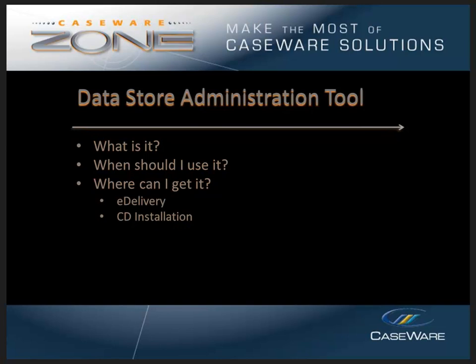So where can you get it? The Data Store tool is a component separate from Working Papers, which allows you to create, connect, and customize data stores. It is intended for use by an administrator, as mentioned. It can be installed after Working Papers is installed. You can get it through two different means. For e-delivery installation, the Data Store Administration tool installation file is located on the same download page as the Working Papers installation file. You can click the Data Store Administration tool hyperlink to begin the install. If your e-delivery website is no longer available due to the seven-day activation period, contact e-delivery at Caseware.com to reactivate the download.